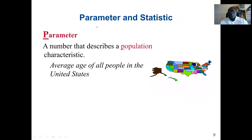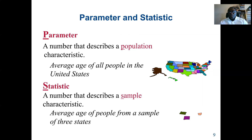A parameter is a number that describes the population characteristics. For example, the average age of all people in the United States - since we say 'all people,' that's the population, so it's a parameter. A statistic is the number that describes a sample characteristic. For example, the average age of people from a sample of three states.